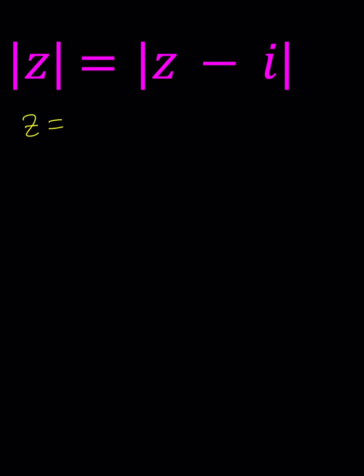Let's go ahead and replace Z with X plus Y I. And then Z minus I is just going to be X plus Y I minus I, which I can write as Y minus 1 quantity times I. That's going to be our imaginary part.